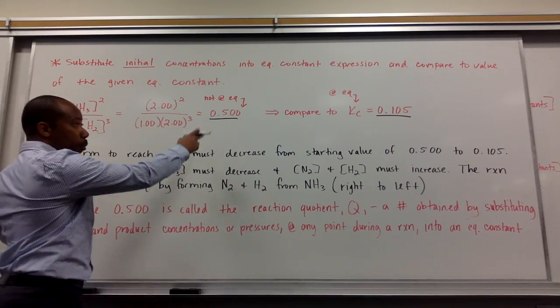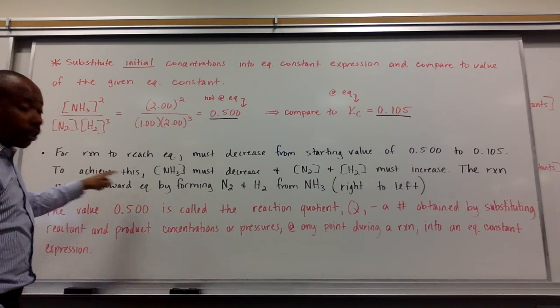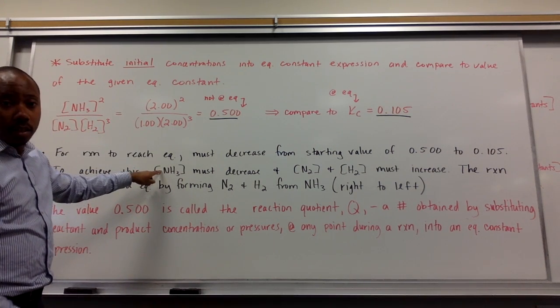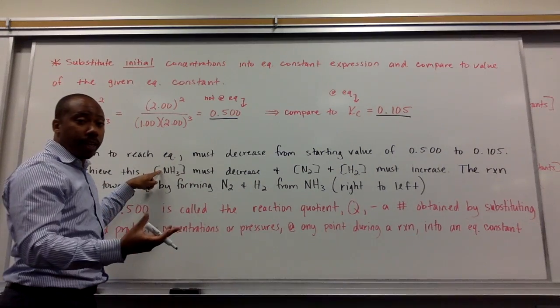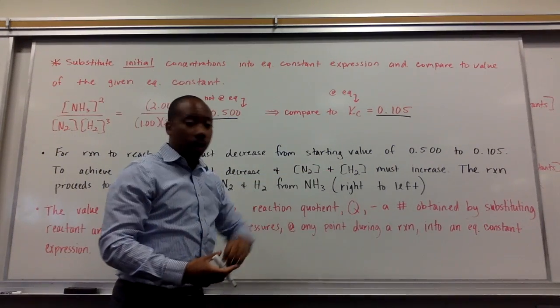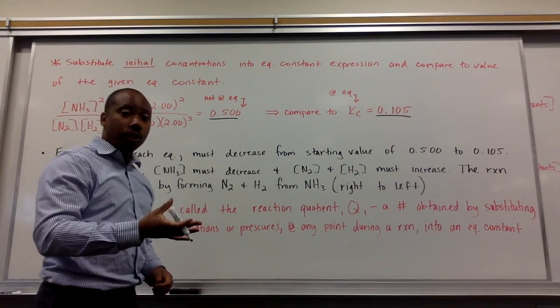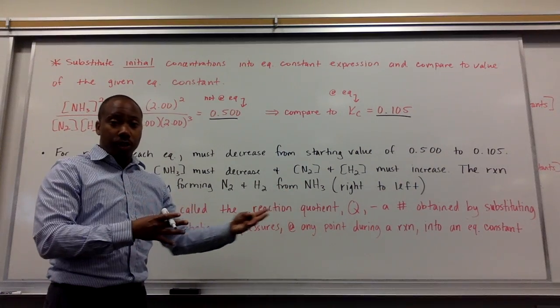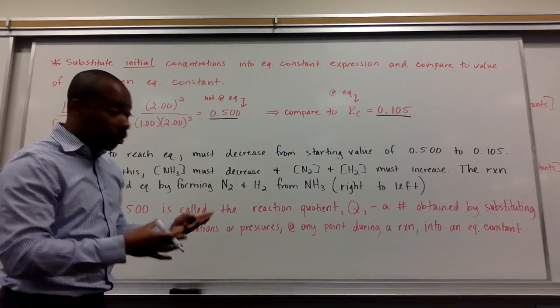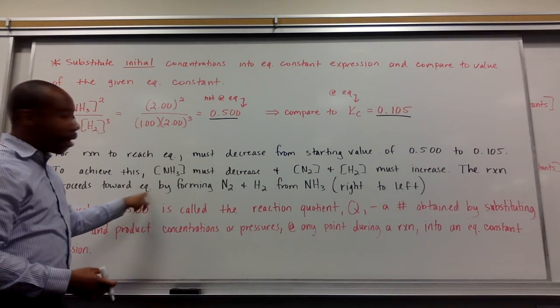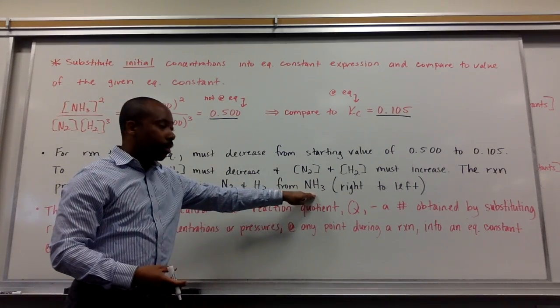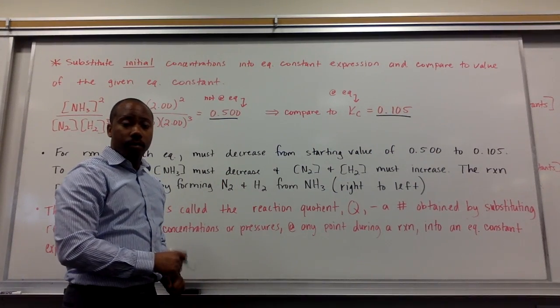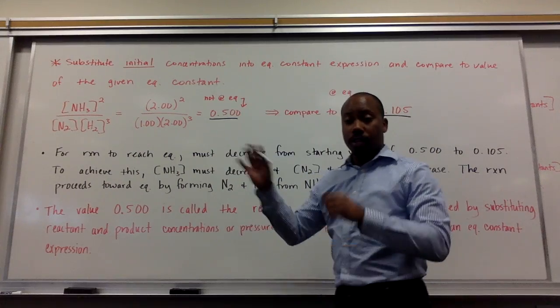In order to achieve a drop from 0.5 to 0.105, we have to decrease our numerator, which is the concentration of NH3. And subsequently, if we decrease NH3, then the concentrations of N2 and H2 are going to increase. So, we decrease NH3, meaning more of it decomposes, forming more N2 and H2. Thus, we say that the reaction proceeds towards equilibrium by forming N2 and H2 from NH3, or basically, the reaction goes to equilibrium from right to left. So, in the reverse direction of our initial balanced chemical equation.